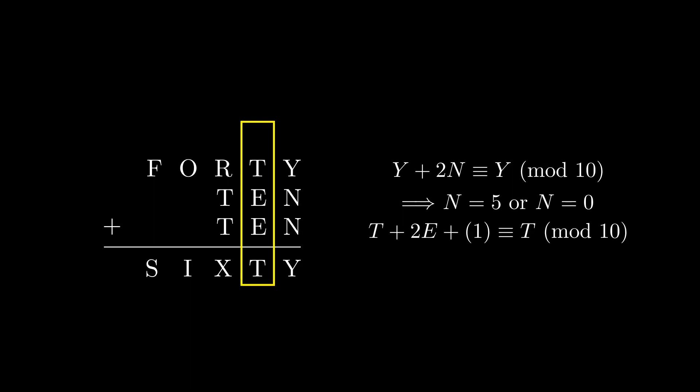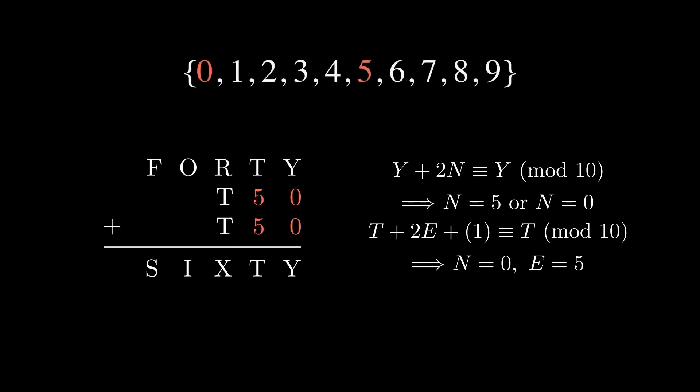This means E can also either be 0 or 5. But since we've already set N equal to 0, E must be 5. Let's fill this in and mark 0 and 5 as used digits before we continue.